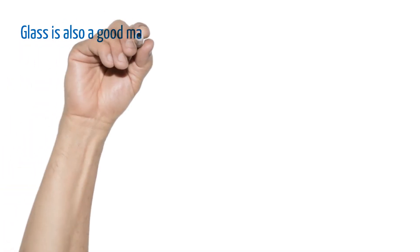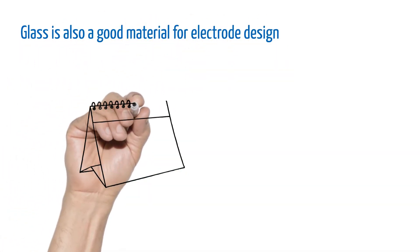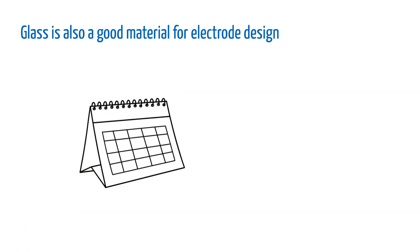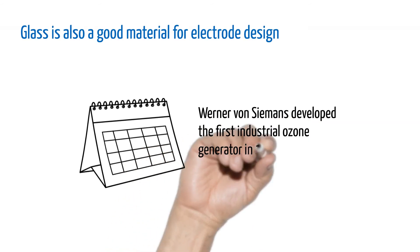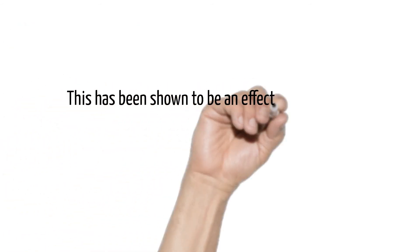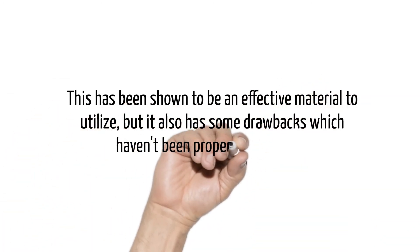As with any industry, technology and research help us discover new materials which might be better suited for ultra-stable ozone production. Glass is also a good material to use for electrode design and ozone production and has been in use for over 150 years when Werner von Siemens developed the first industrial ozone generator back in 1857. This has been shown to be an effective material to utilize, but it also has some drawbacks which haven't been properly addressed.